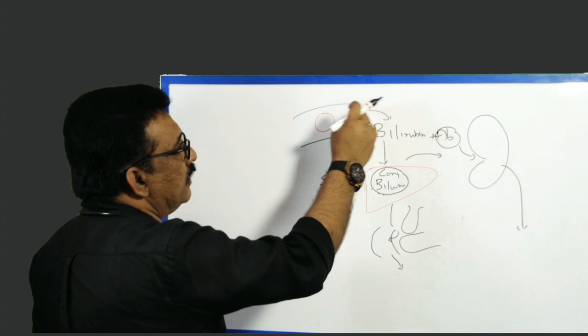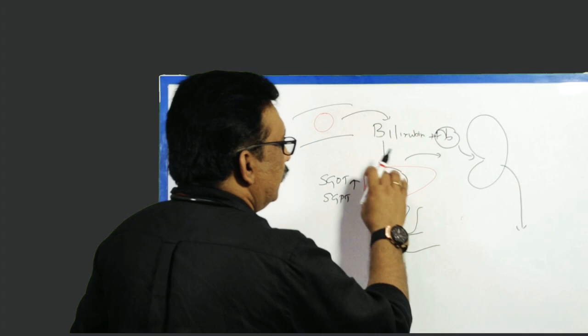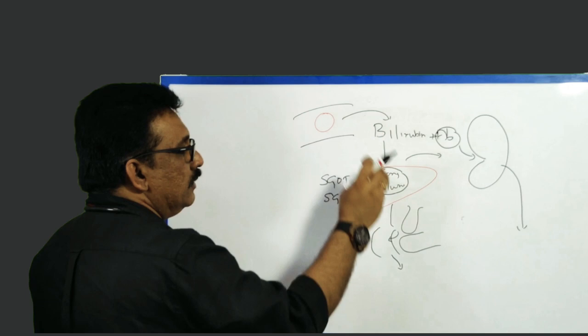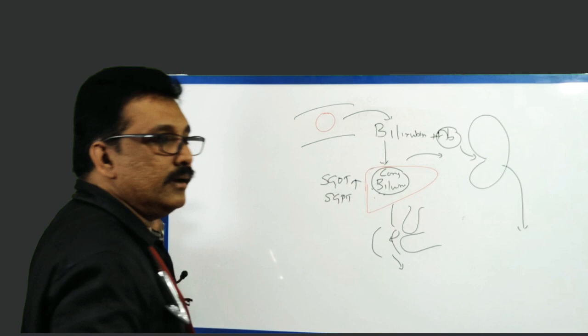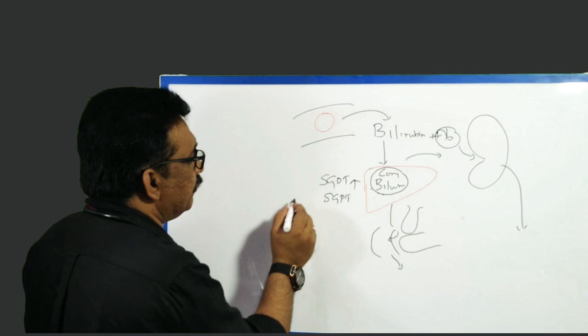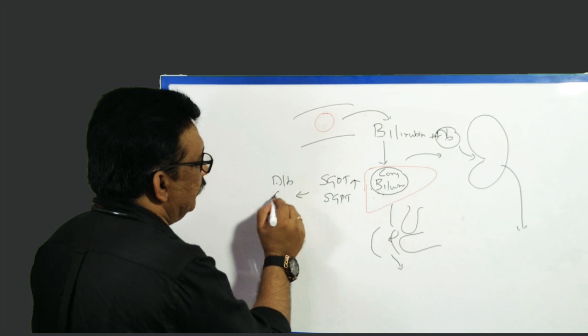In indirect hyperbilirubinemia the patient has clinical jaundice but urine is normal color. In liver disease the patient has more jaundice — bilirubin may be 10, 15, or 20 — liver enzymes are elevated, and urine shows bilirubin with a darker color. These are two important distinguishing features. We'll also look at other parts of the liver function test — albumin and globulin.